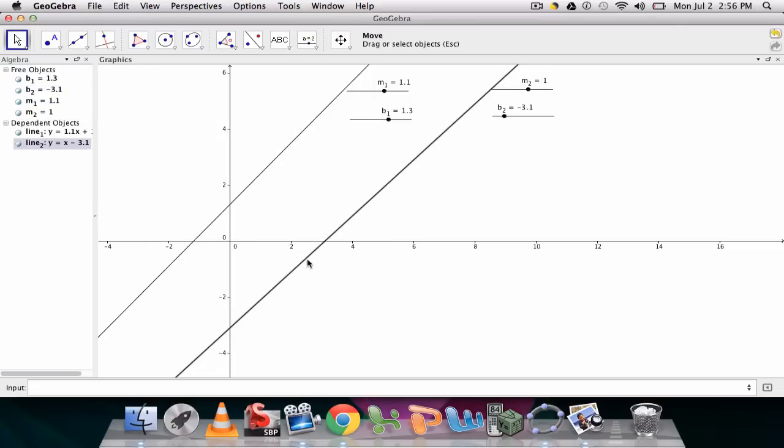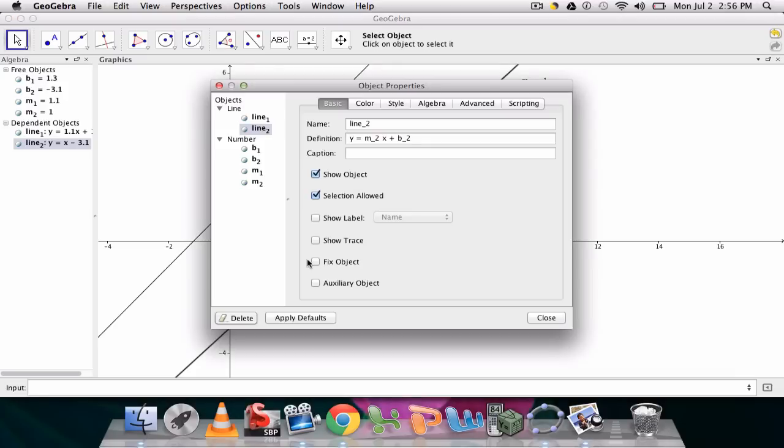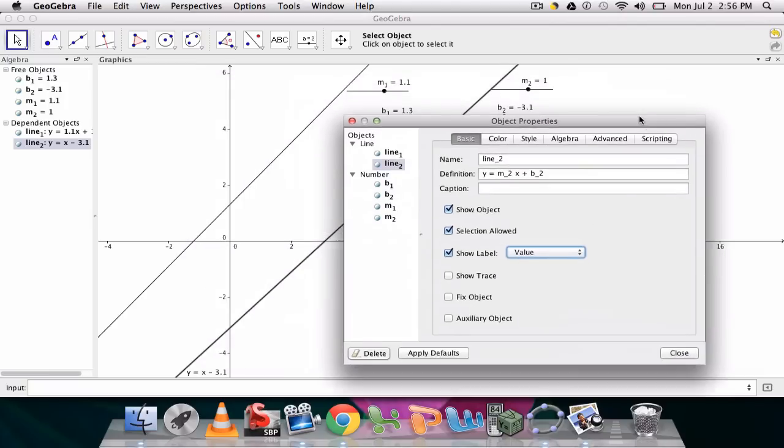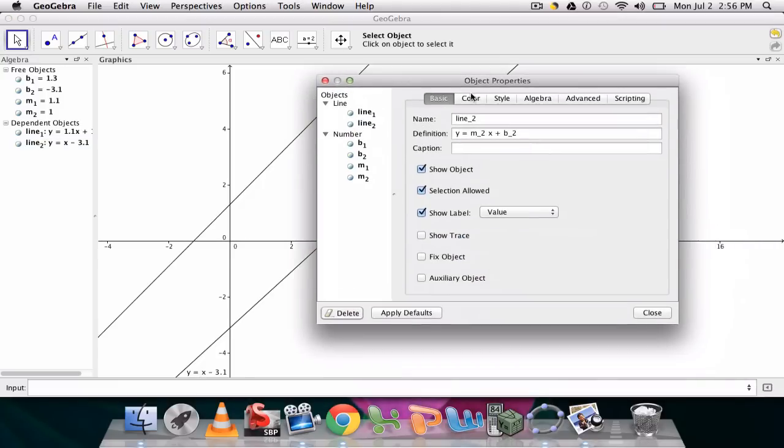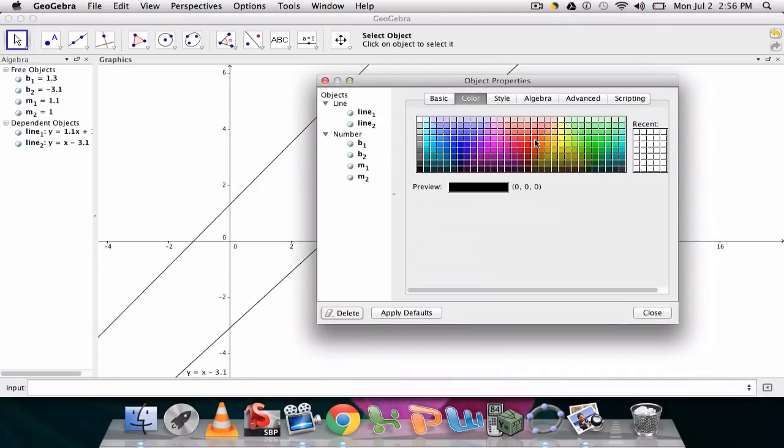So I'm going to select my second line right here. Hit control or command E. And I'm going to show both name and value. Excuse me. Probably just value I think. Let's see how that looks. And there it is right there. I can move that in a moment. And I also want to change the color. Let's say red.